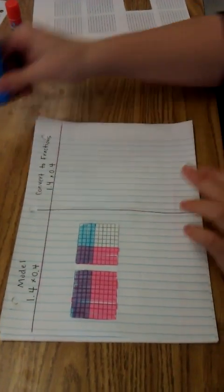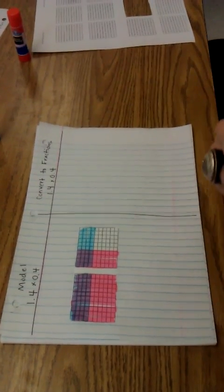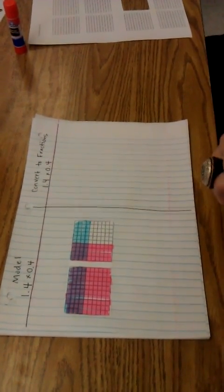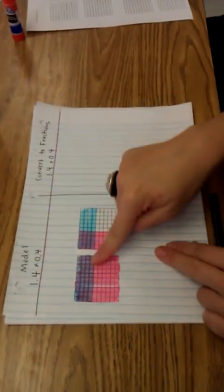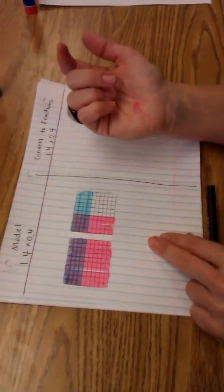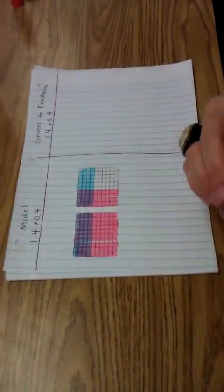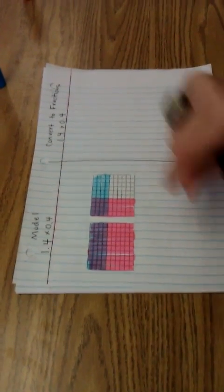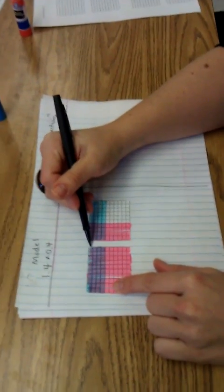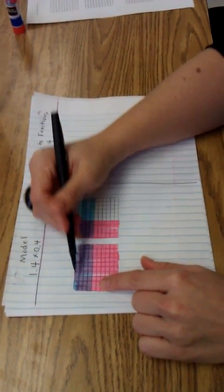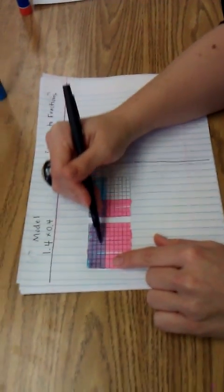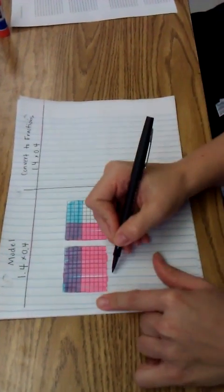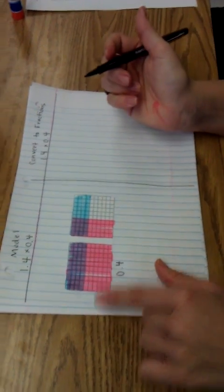With this one, my answer is going to be the parts of the model that are shaded twice. Because they represent one and four tenths of four tenths. So I know that this is ten, so there's one tenth, two tenths, three tenths, four tenths. So this one's got four tenths shaded.